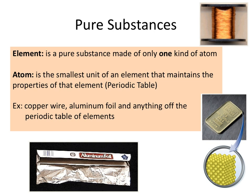Elements are pure substances that are made of only one type or one kind of atom. Atoms are basically the smallest unit of any element that have the characteristics or features of that specific element. All the elements you find on the periodic table fall into this element category of pure substances.